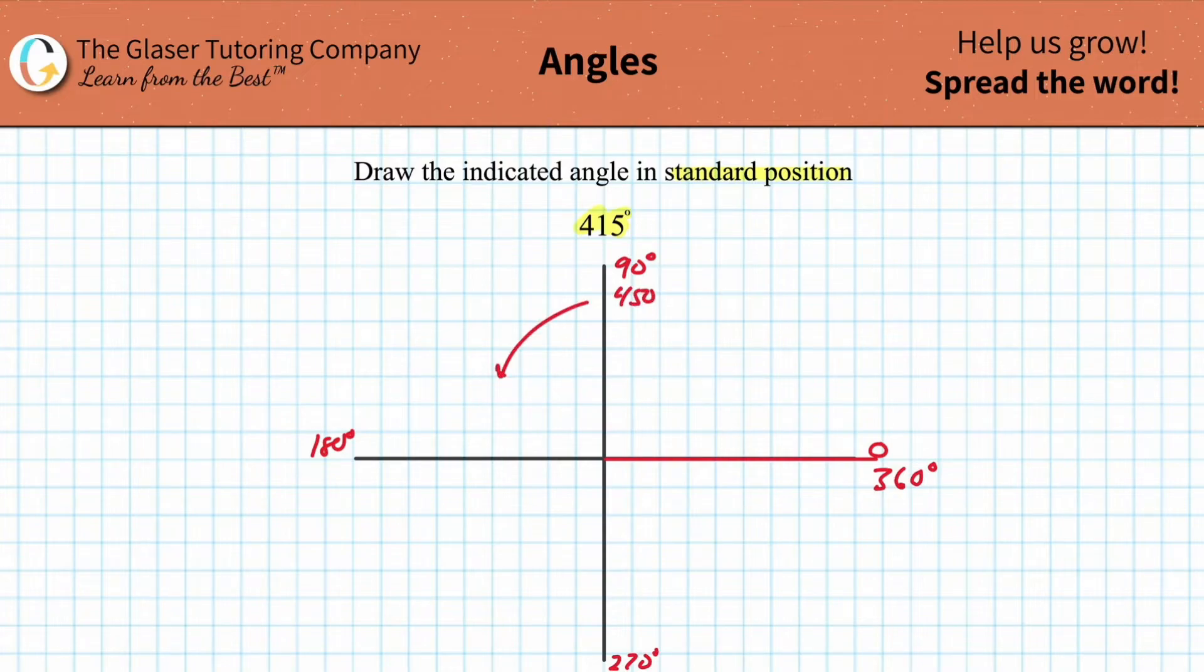And then I could keep going and I could keep adding 90 to this. This would be 540 over here. But I already noticed that 415 is going to fall within this range. So watch what we're going to do. I'm going to draw another little line here.